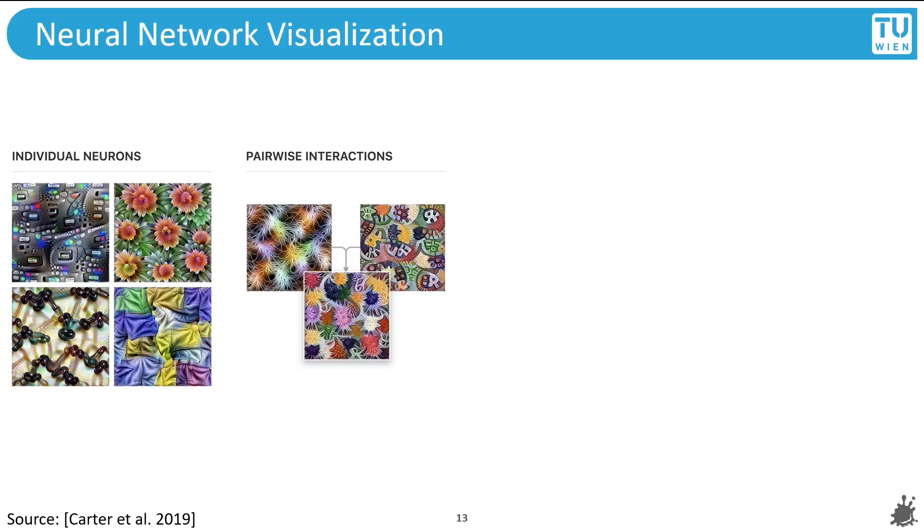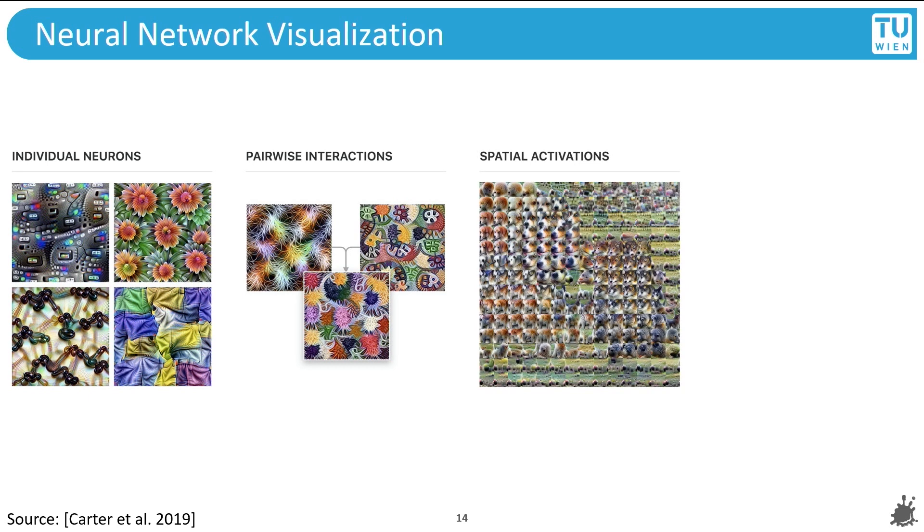There are research works on visualizing the individual neurons of these networks. These are the beautiful colored patterns that you see here. However, it misses all the potential interactions between the neurons, of which there are quite many. Later, researchers started visualizing pairwise neuron activations, which sheds more light on how these neurons work together — another one of those beautiful patterns. This is somewhat more informative. And visualizing spatial activations gives us more information about these interactions between not two, but more neurons, which brings us closer to a full-blown visualization.